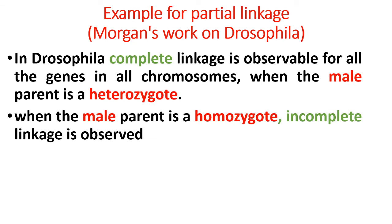Hi students, here is the example for partial linkage. In complete linkage, this is the example of Drosophila. In Drosophila, complete linkage is observed for all the genes in all chromosomes when the male parent is heterozygote. In this case, complete linkage is observed in all chromosomes when the male parent is heterozygote.